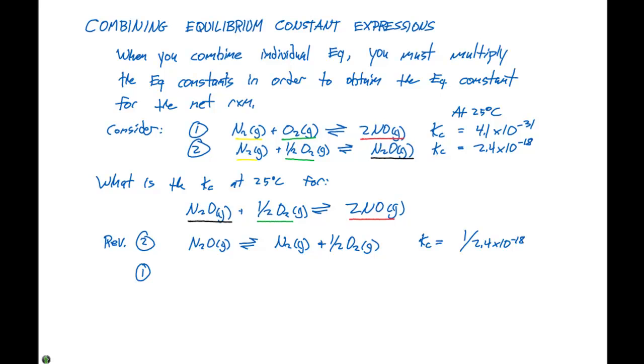The first reaction is N2 gas plus O2 gas in equilibrium with 2 NO gas. The Kc is 4.1 times 10 to the minus 31, which is what we have here. Now we need to add these two together.